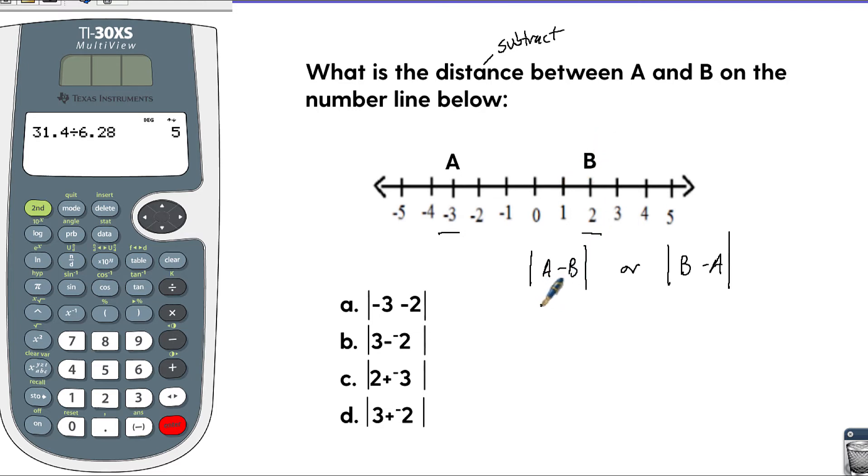If we look at A, which is negative 3, and B, which is 2, it would be negative 3 minus 2. I always teach subtraction as adding the opposite, so this will be negative 3 plus a negative 2, which gives you the absolute value of negative 5, which is just 5.